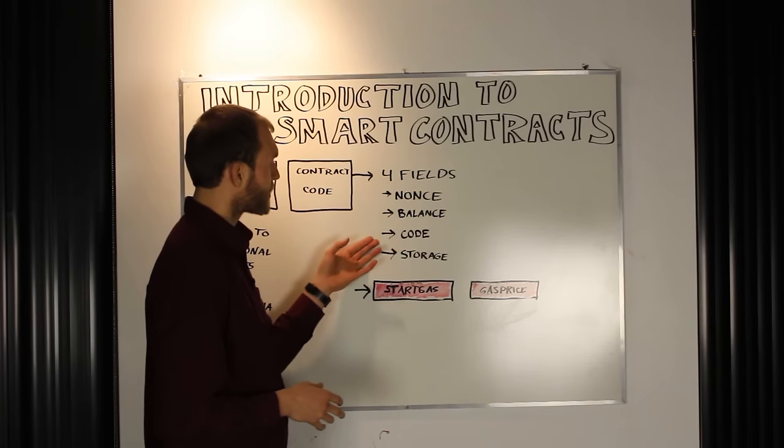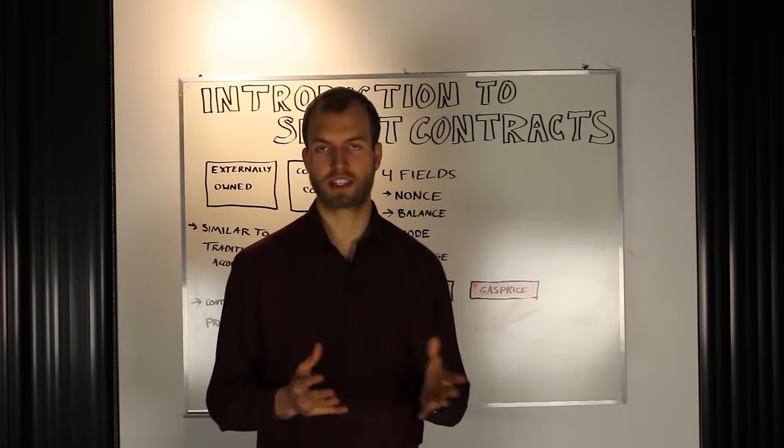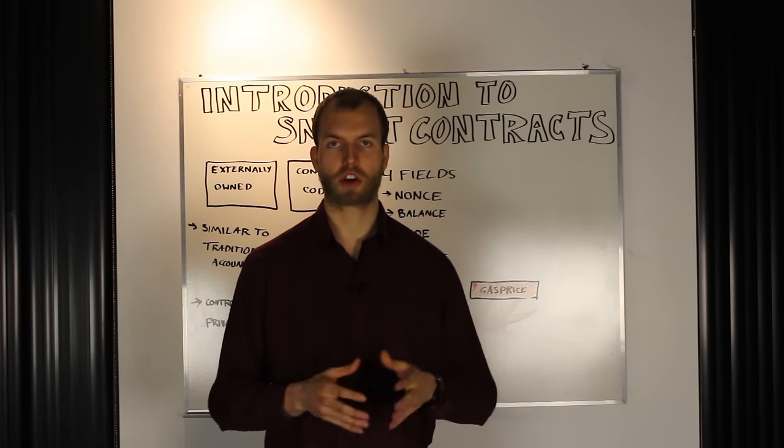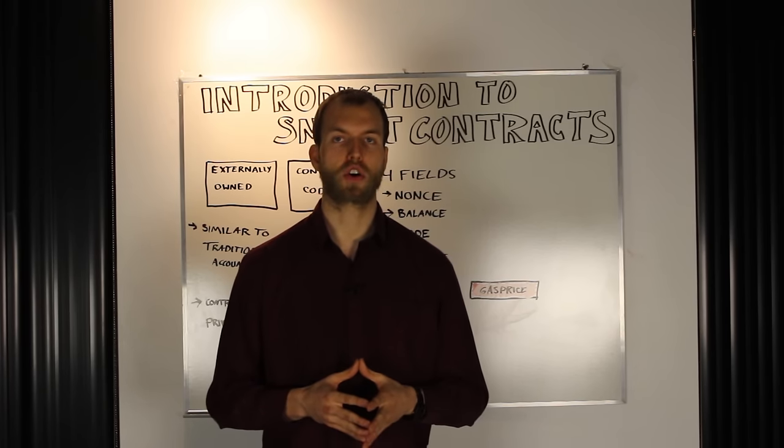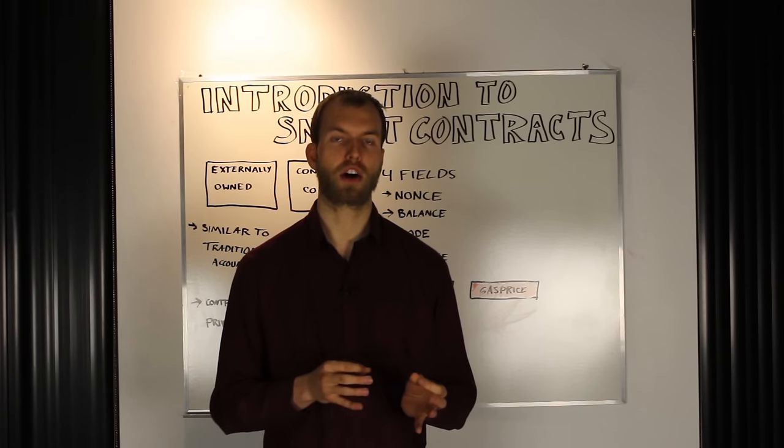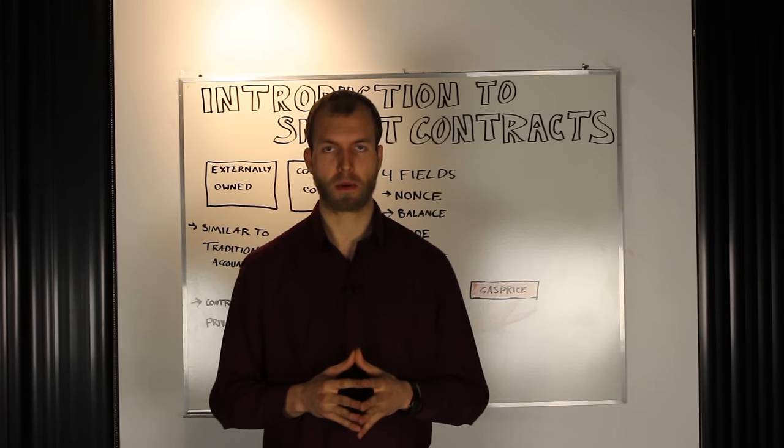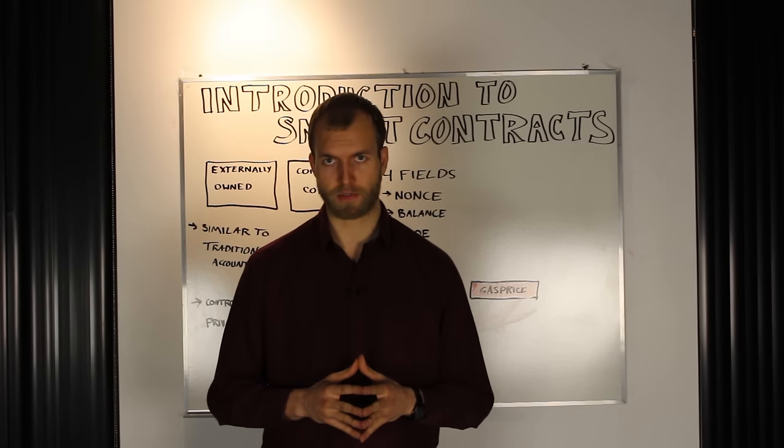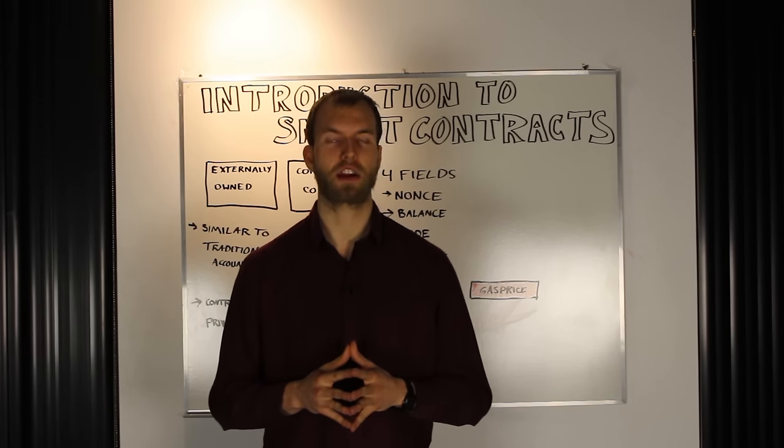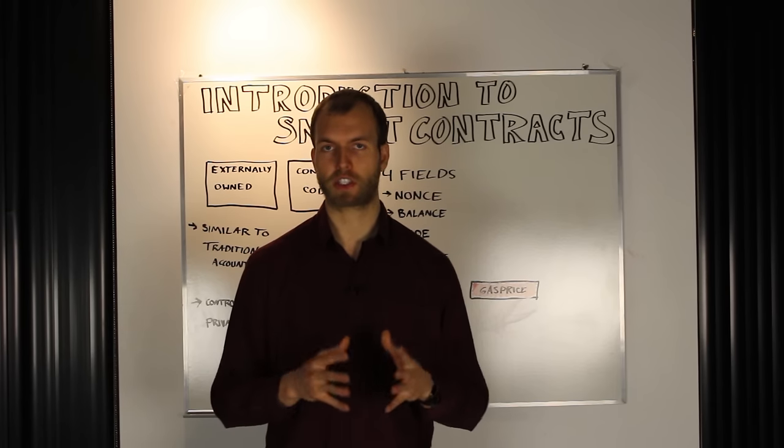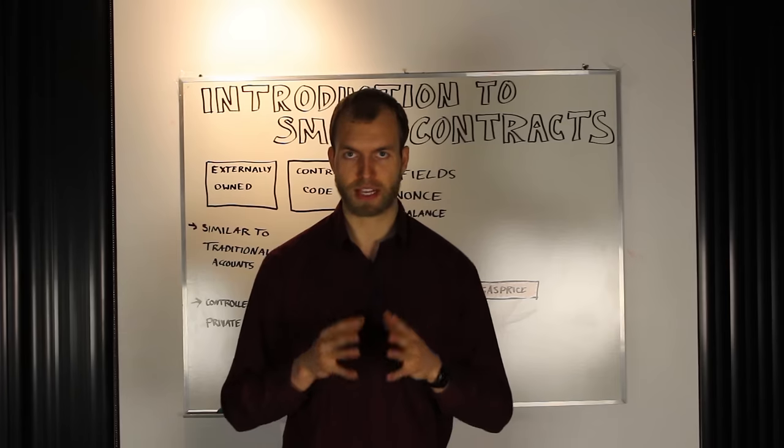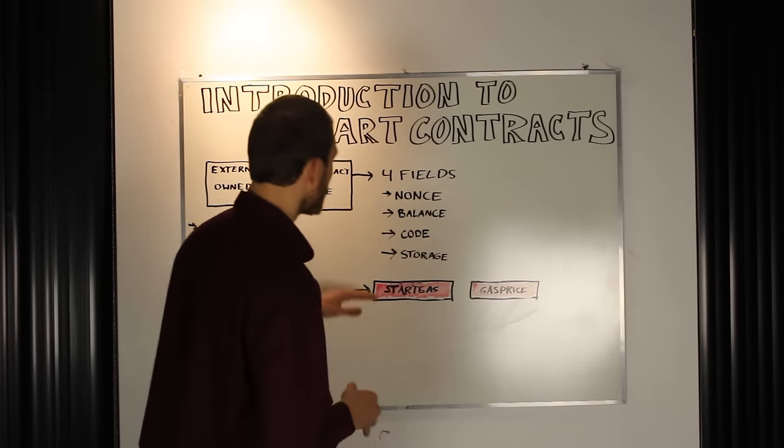Thirdly, there is the code itself of the smart contract. And this is the code that is compiled in order to be read by the Ethereum virtual machine, the smart contract itself, and the logic necessary to perform whatever function it is that the developer has specified.